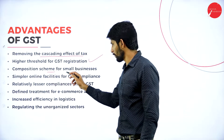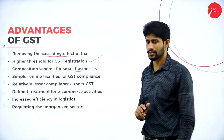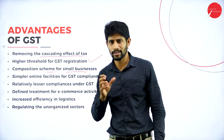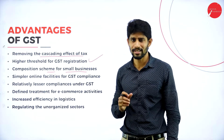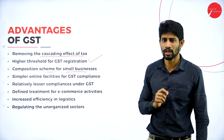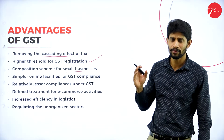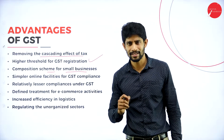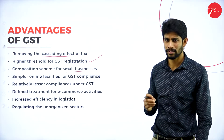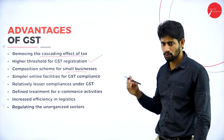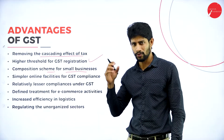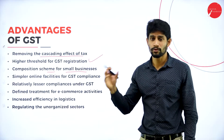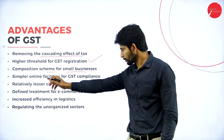Third, composition scheme for small businesses. If you are a small business entity, they will not collect 28 percent or 18 percent or 12 percent of tax. They will collect a very small percentage — 2 percent or 1 percent — based on what kind of goods you are selling.